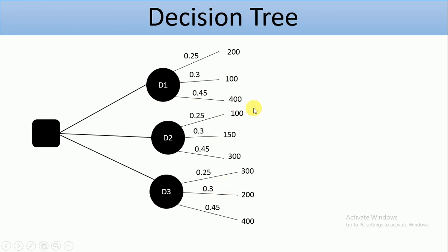And from here, from this decision diagram, this decision tree, you can see that it will be easier for us to determine the expected monetary value for D1, which is going to be 0.25 times 200, plus 0.3 times 100, plus 0.45 times 400. The same thing goes to D2. The expected monetary value for D2 will be 0.25 times 100, plus 0.3 times 150, plus 0.45 times 300.